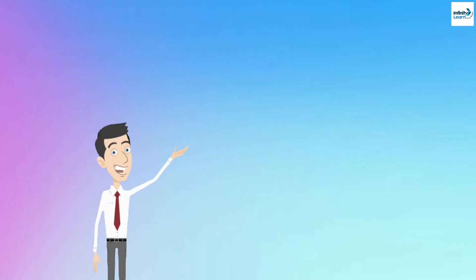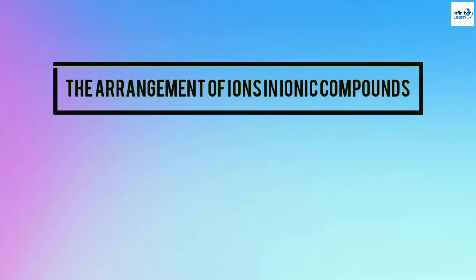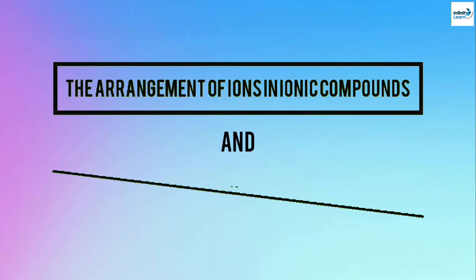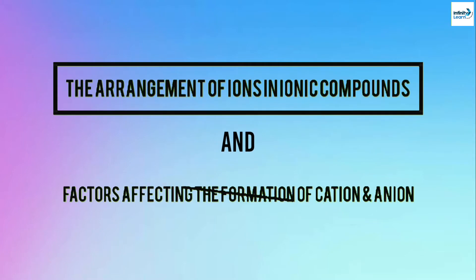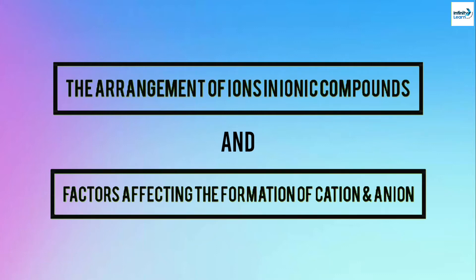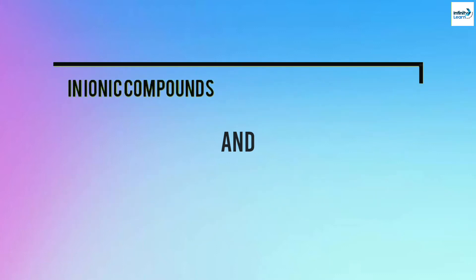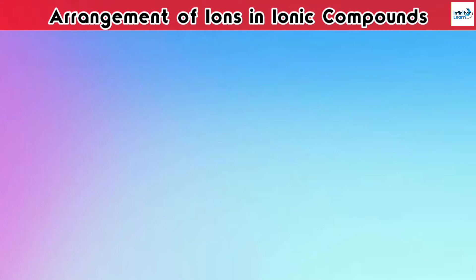Hey students, how are you? So today in this video, we are going to talk about two topics, which are arrangement of ions in ionic compounds and the factors affecting the formation of cation and anion. So firstly, let's see about the arrangement of ions in ionic compounds.